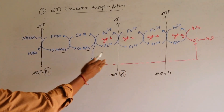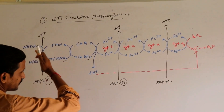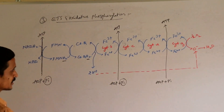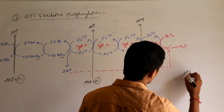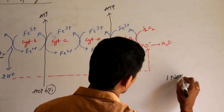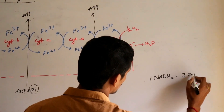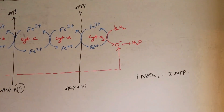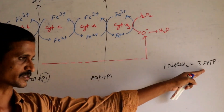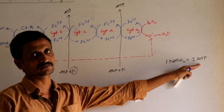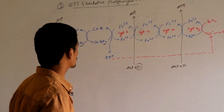When 1 NADH2 is finally converted into ATPs, 1 NADH2 when oxidized leads to the production of 3 ATPs. That means, comparing with ATP, NADH2 is a bigger energy-rich substance.